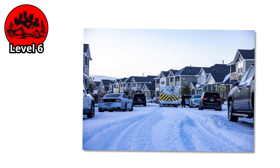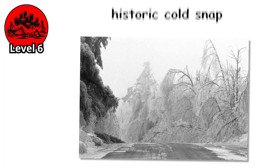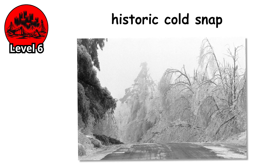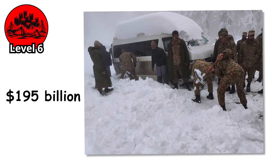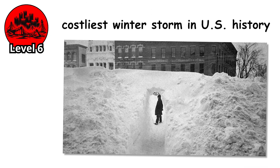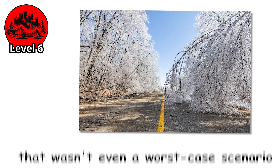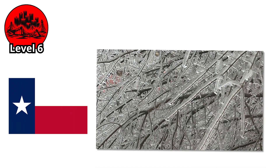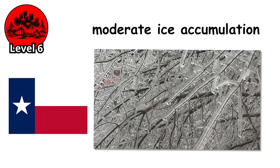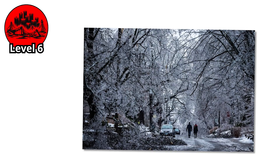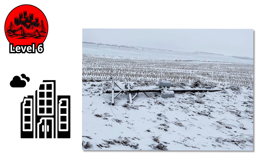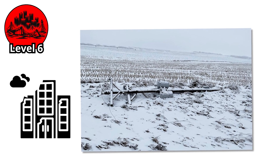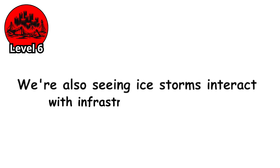In 2021, Texas experienced something close to this — an ice storm followed by a historic cold snap that caused the entire state's power grid to fail. Millions lost power in sub-freezing temperatures. The death toll exceeded 200 people. The economic damage topped $195 billion, making it the costliest winter storm in U.S. history. But here's the truly scary part: that wasn't even a worst-case scenario. Texas had only moderate ice accumulation — around half an inch in most areas. Imagine if that same cold snap had been preceded by a Level 3 or Level 4 ice storm. The infrastructure damage would have been exponentially worse.